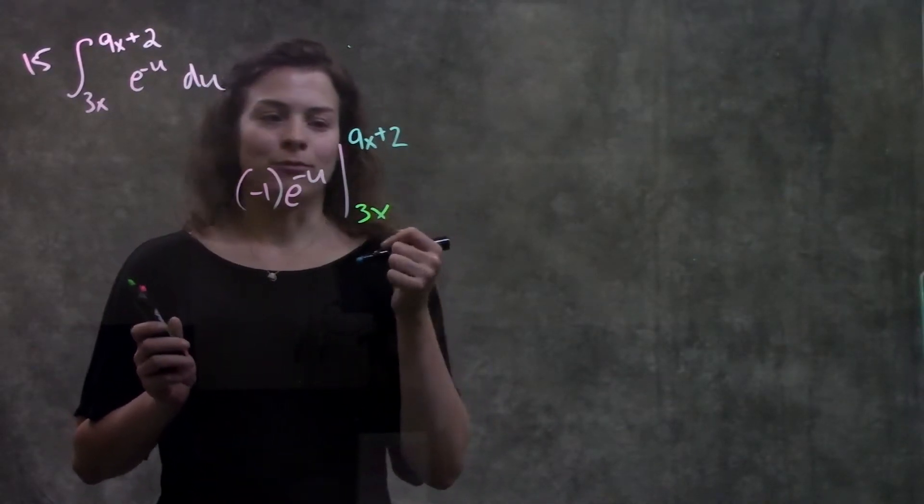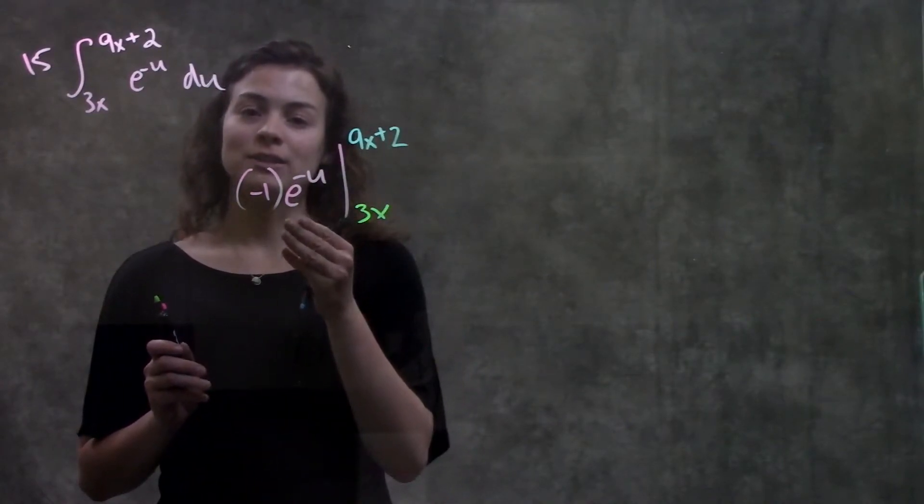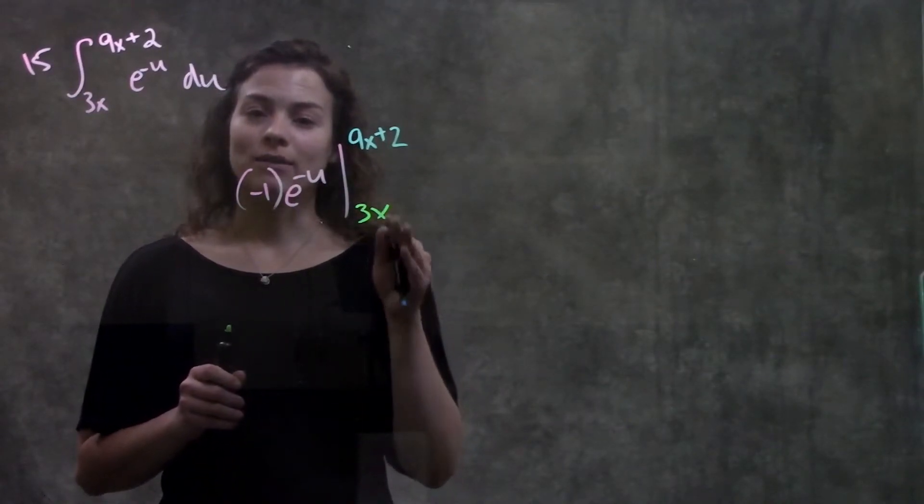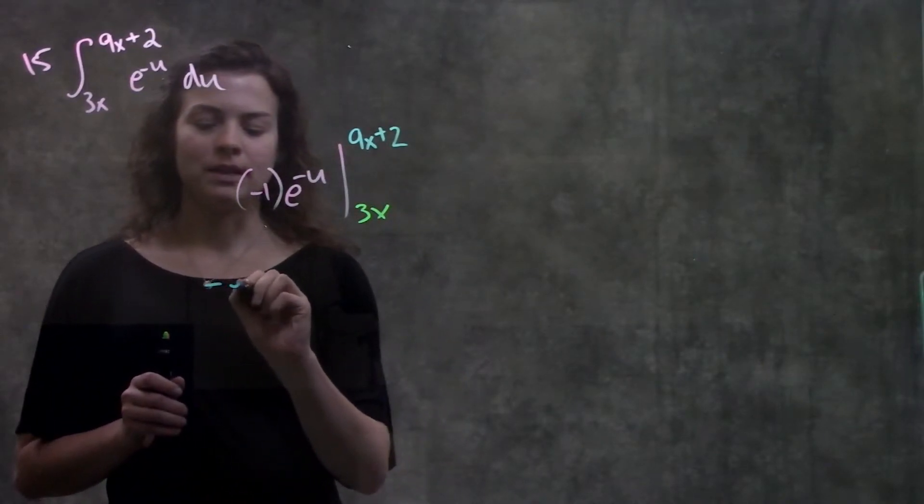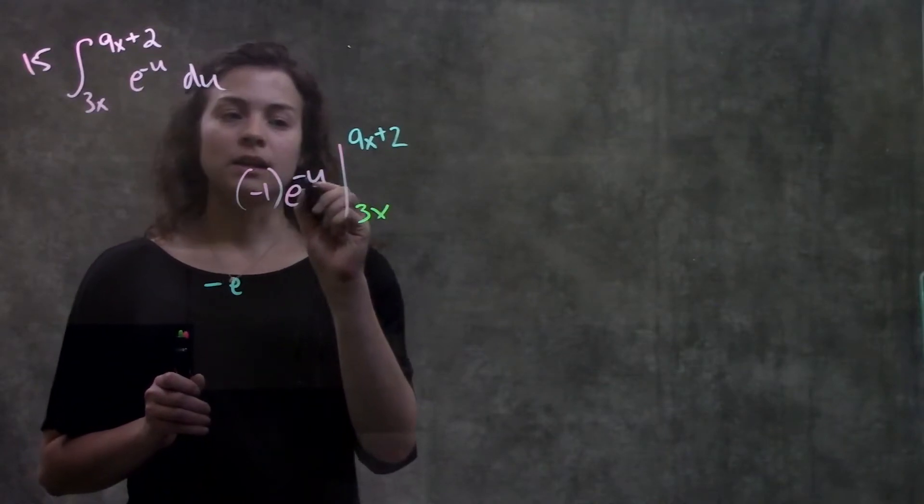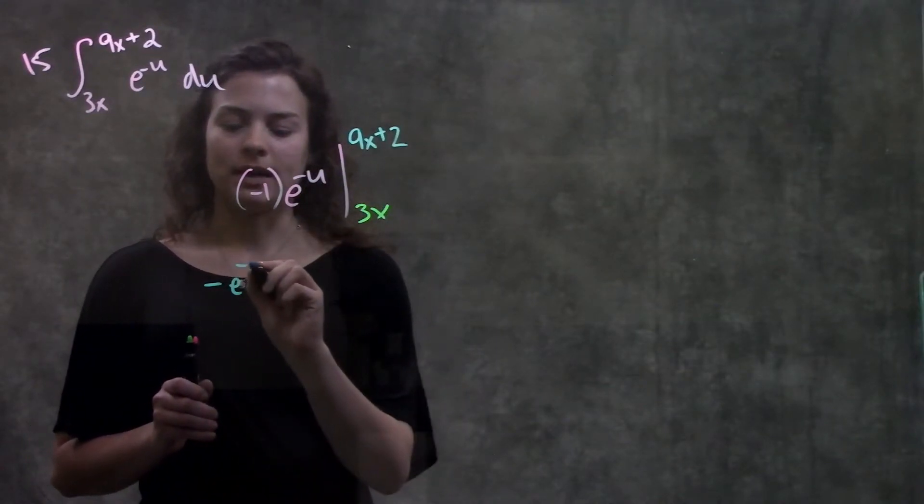And now we do the same thing as we did before. We plug in our top number into this integral and subtract whatever we get when we plug in this bottom number. So we plug in this top number, it becomes negative e to the... This negative sign here will distribute to this entire quantity. So negative times 9x plus 2 minus...